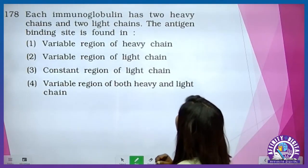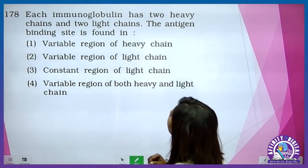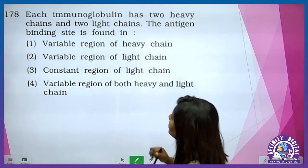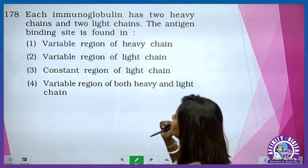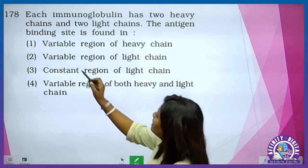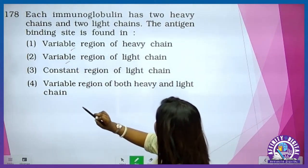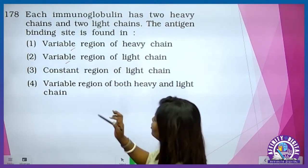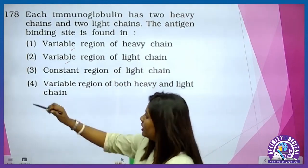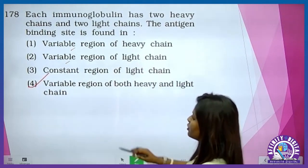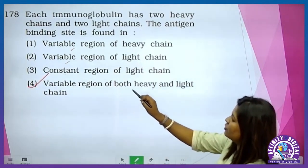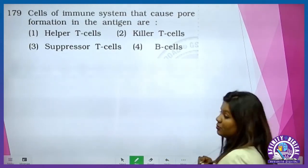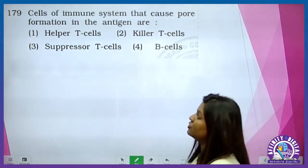Each immunoglobulin has two light chains and two heavy chains. The antigen binding site is found mainly in the variable region. Antigen binding site is found in the variable region of both heavy and light chain — so it is option 4. Baqi jo region hai wo constant region hota hai.